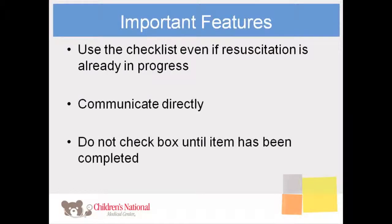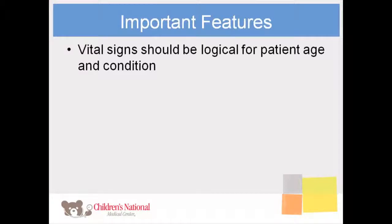Please do not check the box for the action item until the task has been completed. You may need to prompt someone to begin a task, and then later go back to check the box once the task is completed. There is a box for the vital signs at the bottom of the primary survey section. Please be sure to note the values on the monitor screen and consider whether they make sense for both the age and status of the patient. If the vital signs are not normal, you should have the team manually reassess the patient in addition to troubleshooting the equipment. Abnormal vital signs should not be automatically attributed to equipment malfunction. If a value is not displayed on the monitor, you should prompt the team to check the placement or connection of the leads and monitors.